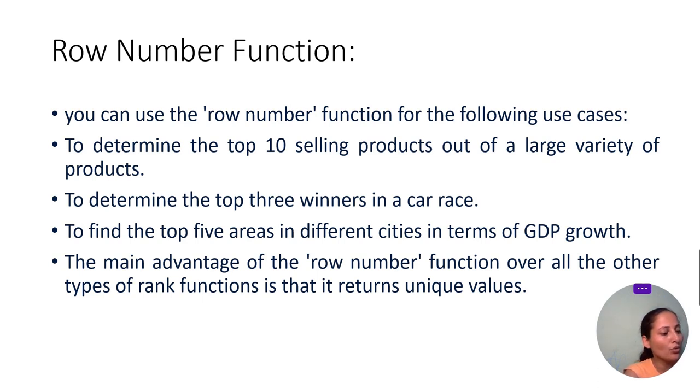How do we solve this? To solve this, we use the row number function, which gives a unique value for each and every row, even if more than one row has the exact same value for a particular entity or particular column we are trying to sort it out.